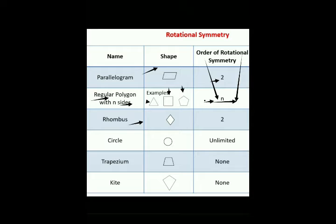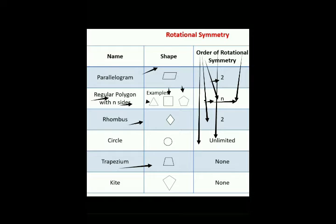A circle has infinite lines of symmetry, so the order of rotational symmetry for a circle is infinite. A trapezium — after a 360-degree rotation we cannot get the same figure, so the order of rotational symmetry in a trapezium is zero (none). Similarly, in a kite shape, after a 360-degree turn we cannot get the same figure, so the order of rotational symmetry in a kite is also zero.